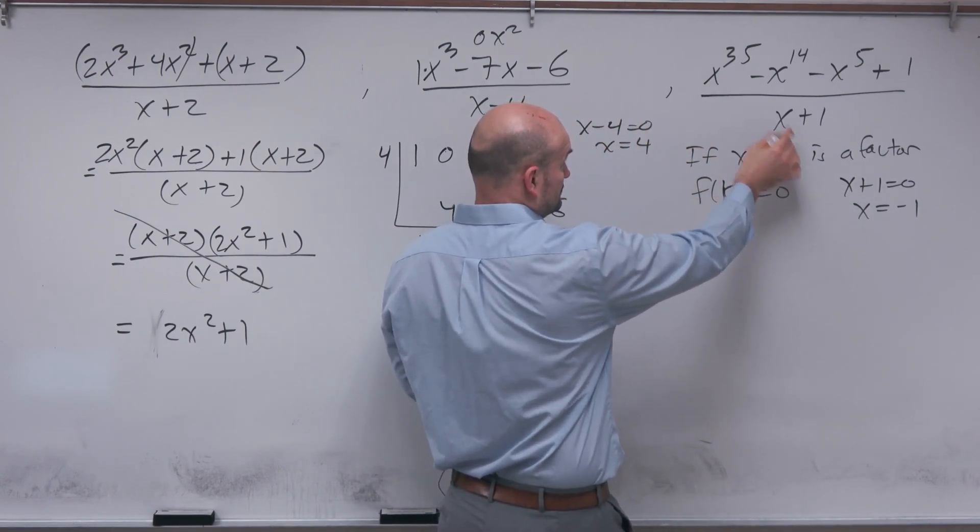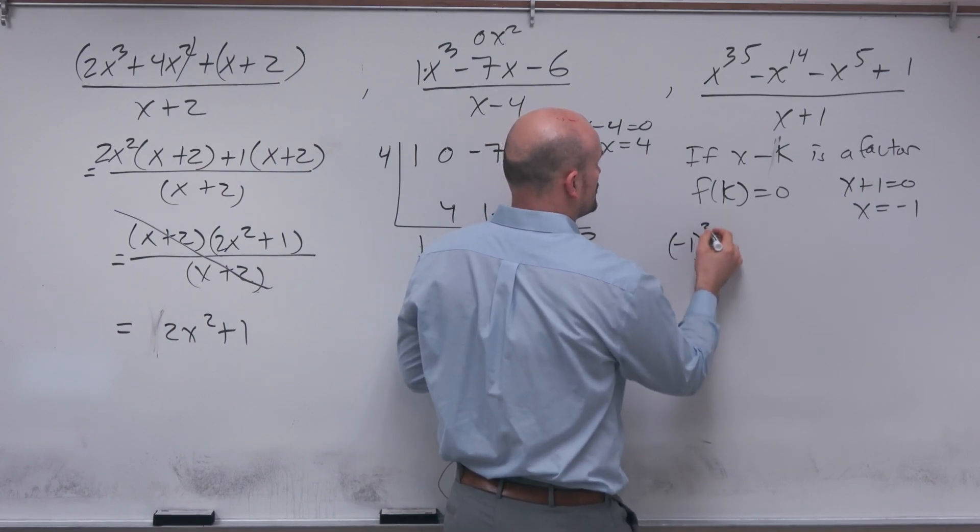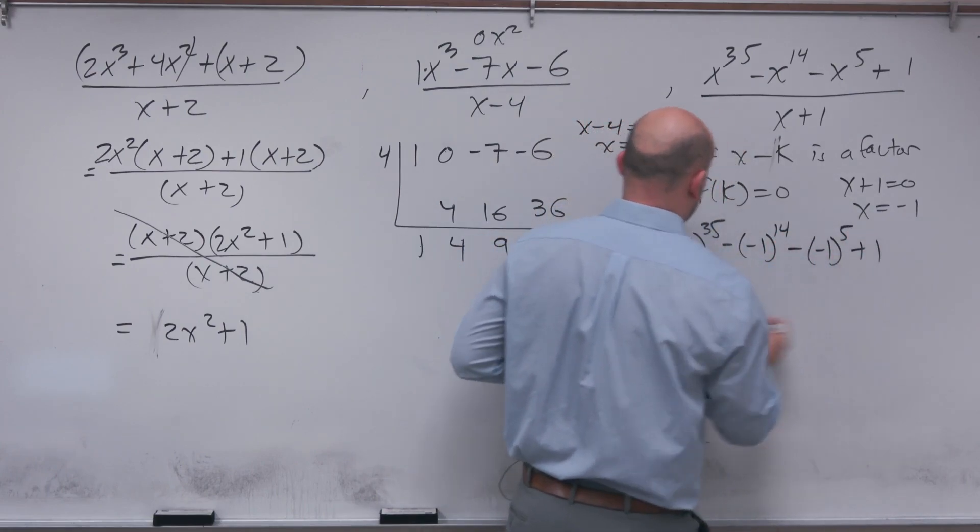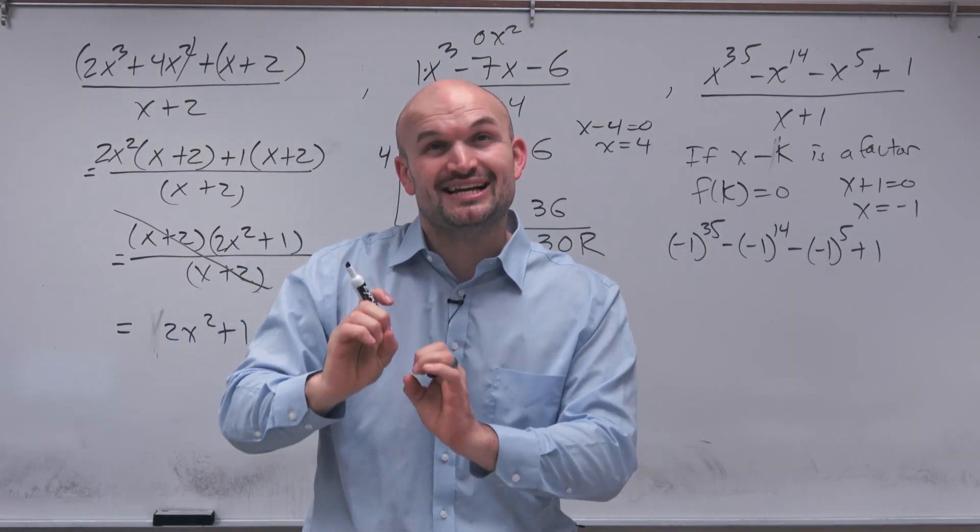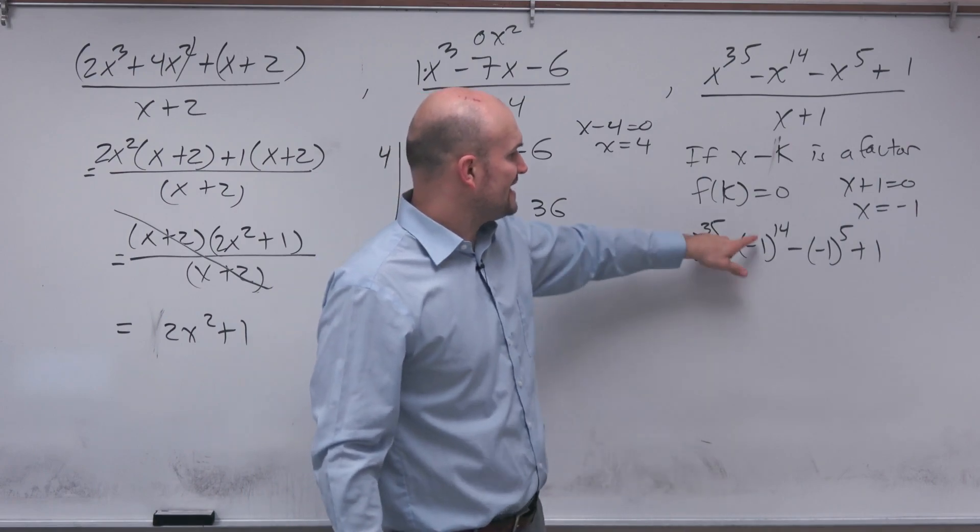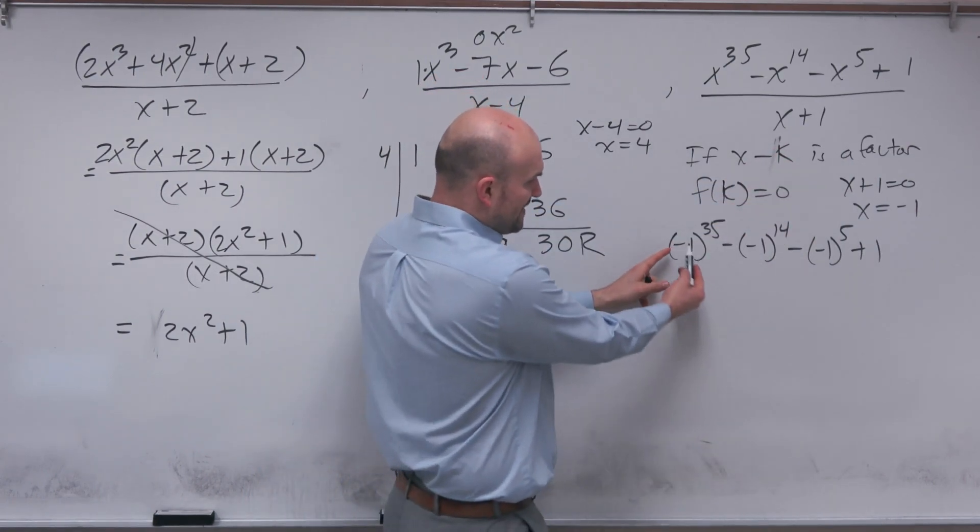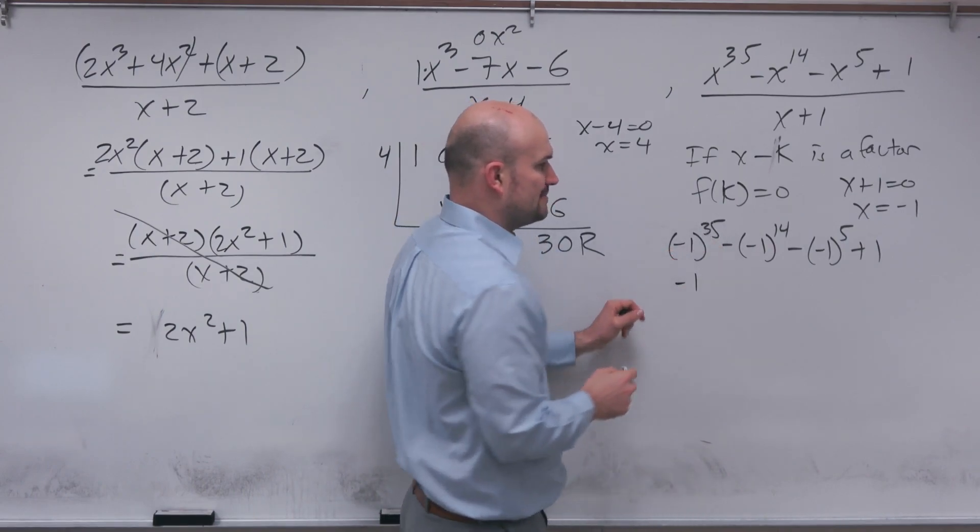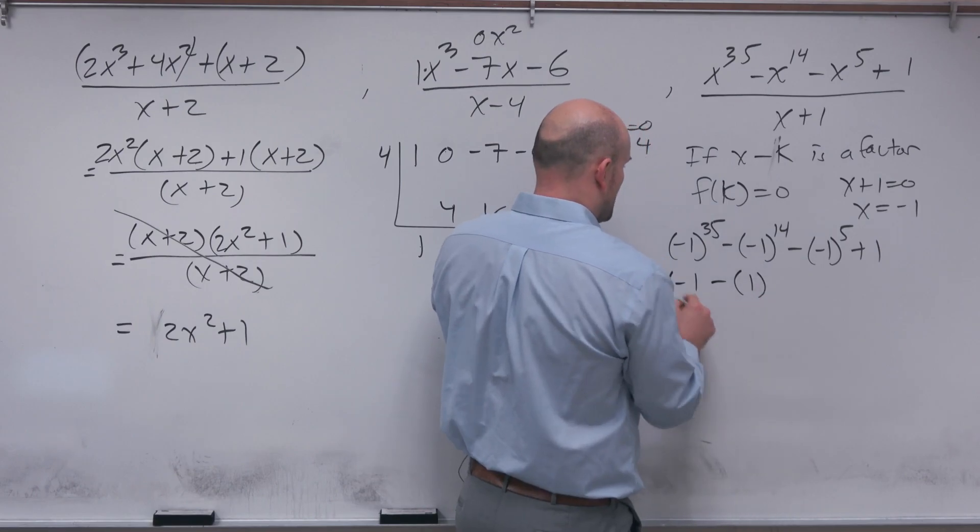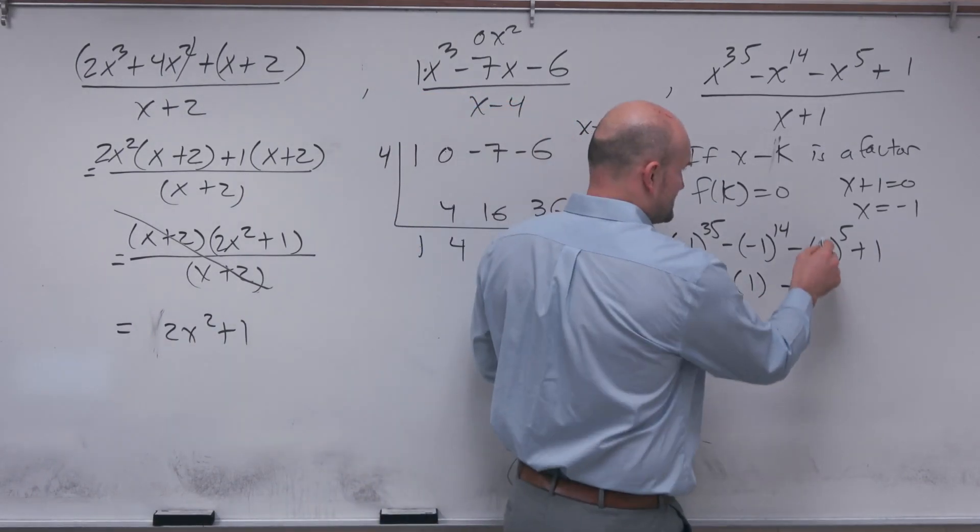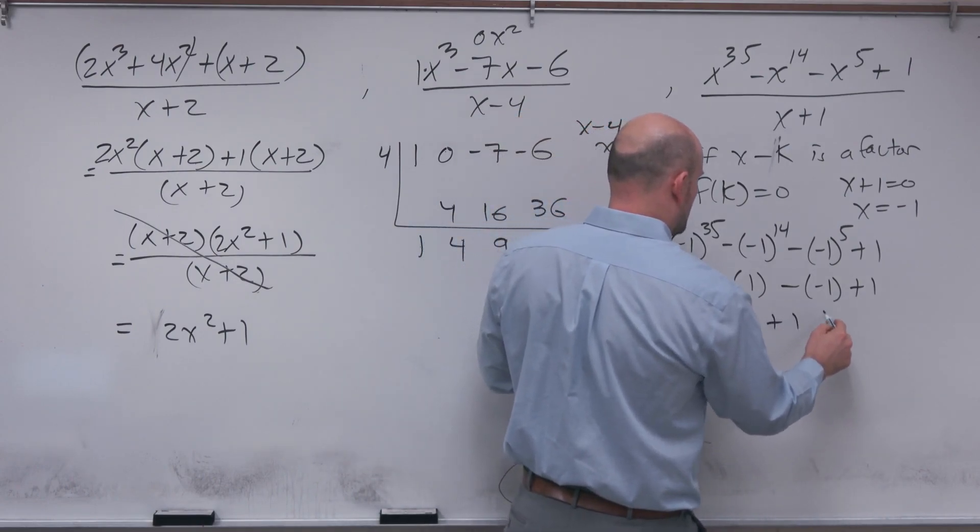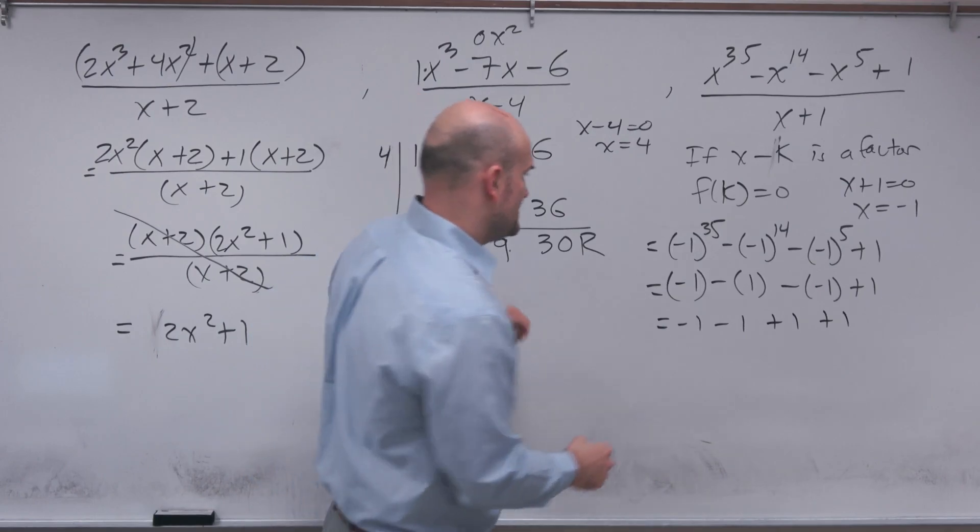What we're going to do now is I'm going to plug in negative 1 to the 35th power minus negative 1 to the 14th power minus negative 1 to the 5th power plus 1. Now, to do this, it's very important to understand, it doesn't matter what the number is, but you need to take care of if it's positive or negative. Any time you take a negative number raised to an odd power, it's always going to be negative. Whenever you take a negative power and raise it to an even power, it's going to be positive. So if I take negative 1, multiply by itself 35 times, that's going to give me a negative 1. If I take negative 1, multiply by itself 14 times, that's going to give me a positive 1. This is going to become a negative 1 plus 1. So I have negative 1 minus 1 plus 1 plus 1. And hopefully you can see here, that's going to equal 0.